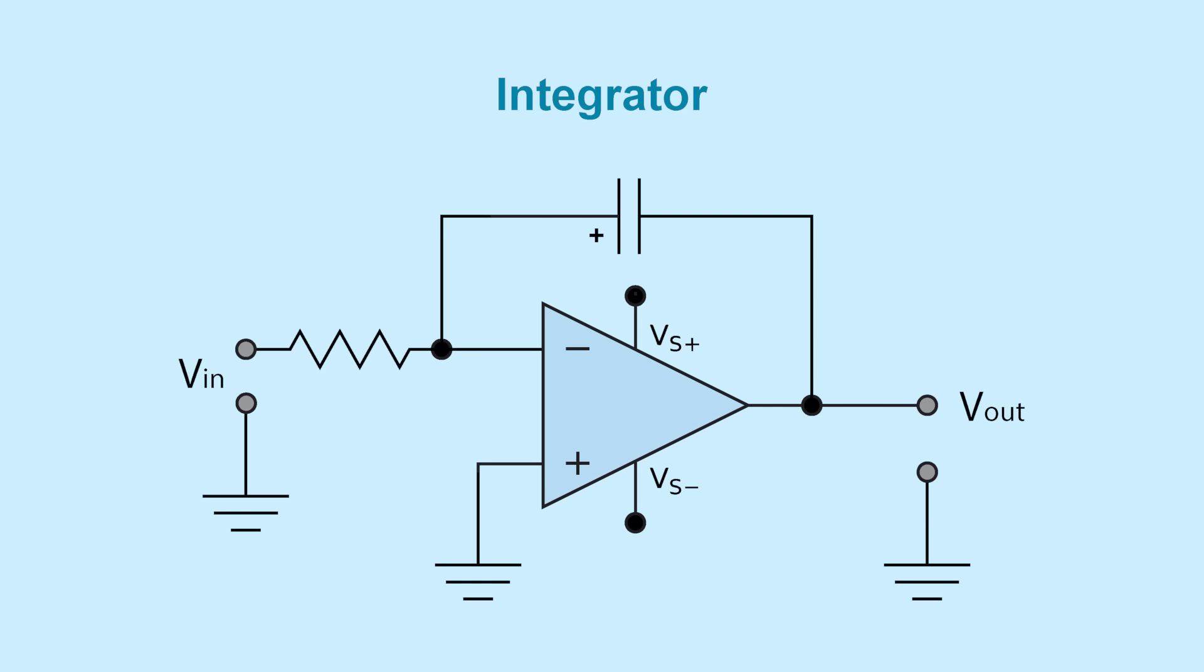By replacing the feedback resistor with a capacitor, an op amp can be used to make an integrator. An integrator op amp produces an output voltage that is proportional to both the amplitude and the duration of the input signal. Integrators can be used to make analog-to-digital converters and wave shaping circuits.